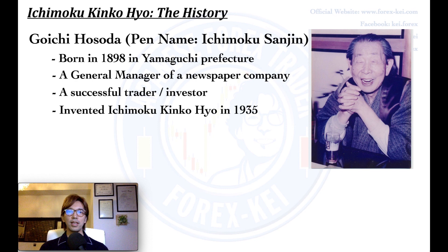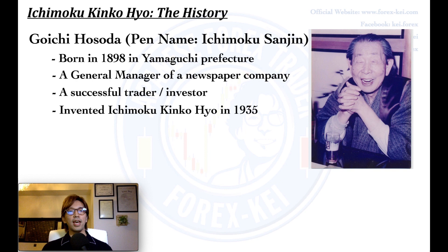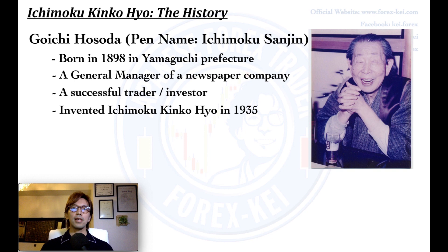When he first invented it around 1935, his technique was originally called Shinto Tenkan-sen, and gradually the name has been changed. And in 1950, he decided to give his knowledge to three of his friends — actually he was asked to share his knowledge from three of his friends. This is kind of a famous story in Japan. At that time he was already well known for his prediction of the market, and he decided to reveal his technique only to those three people, no one else.